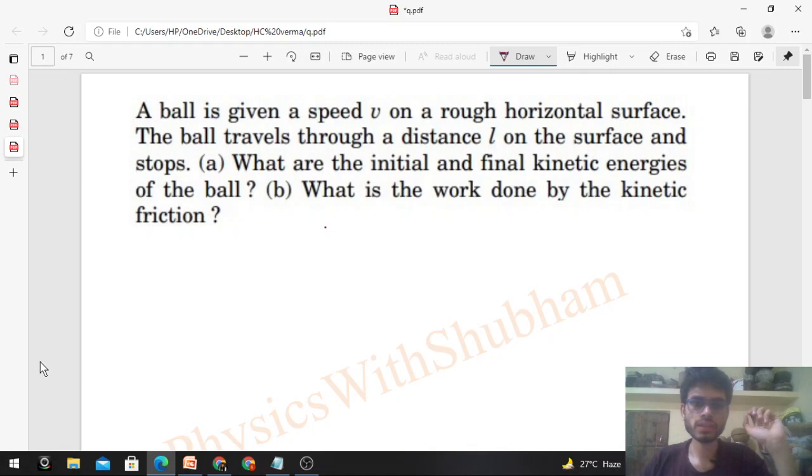It says a ball is given a speed V on a rough horizontal surface. The ball travels through a distance L on the surface and stops. What are the initial and final kinetic energies of the ball?